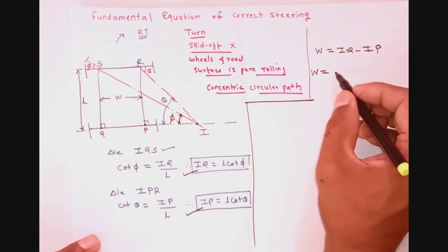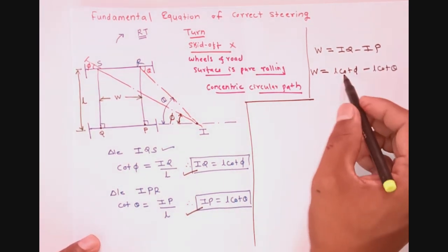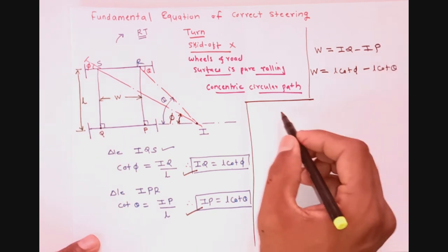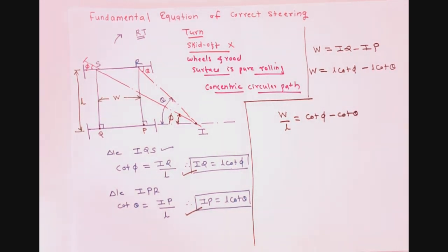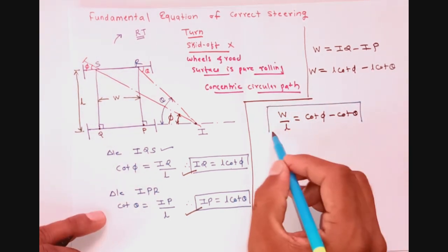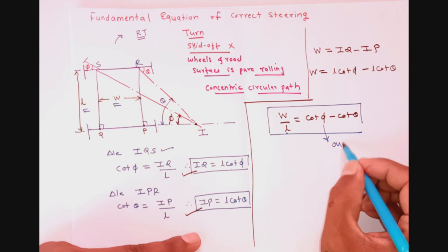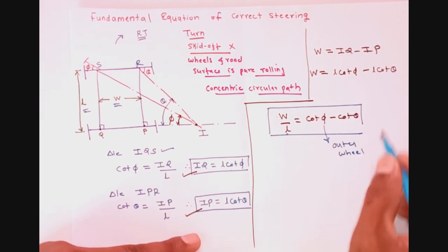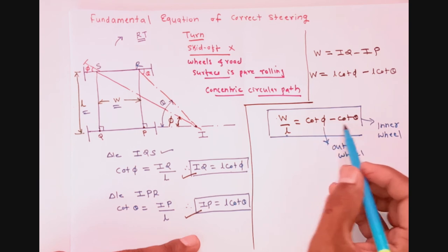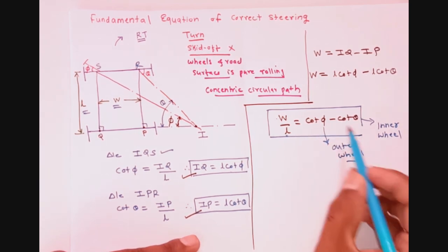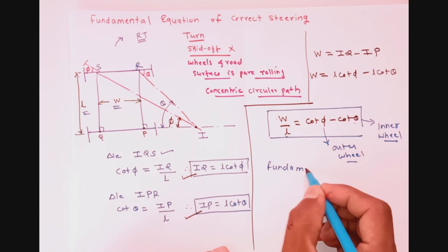W equals IQ minus IP. Substituting the values, W equals L·cot(phi) minus L·cot(theta). Taking L to the left-hand side, we get W/L equals cot(phi) minus cot(theta), where W is the width of the vehicle, L is the wheelbase, phi is the angle turned by the outer wheel, and theta is the angle turned by the inner wheel. This equation is called the fundamental equation of correct steering.